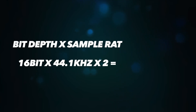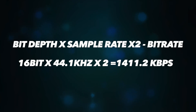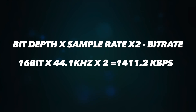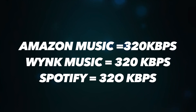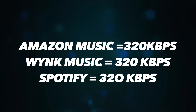Now for the interesting part. If you multiply the bit depth by the sample rate by 2 (for stereo channels), you get the bitrate of that audio — essentially its bandwidth. To stream typical CD quality audio losslessly, you need around 1411 kbps. Most popular streaming services stream at a max of 320 kbps, which means they are clearly compressing the audio and using a lossy format — definitely not lossless.